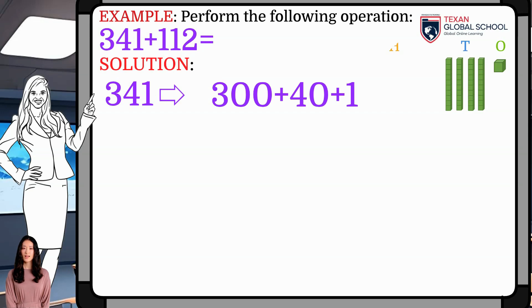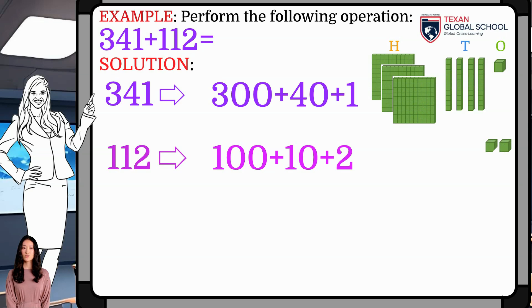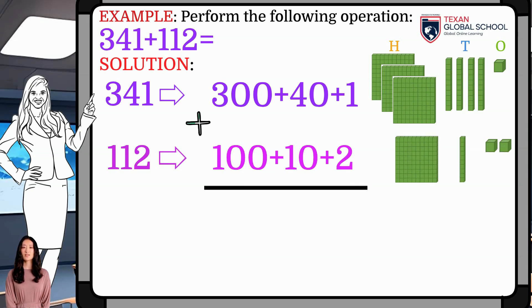341 has a 1, 4 10s, and 3 100s. 112 has 2 1s, a 10, and a 100. We will use the bars in each case to see the model. Then, draw a line below to make the addition.